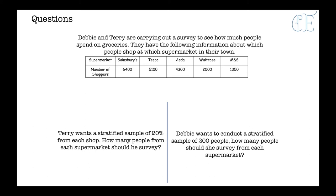If you've paused the video, let's have a look at the question. Debbie and Terry are carrying out a survey to see how much people spend on groceries. They have the following information about which people shop at which supermarket in their town. So we have Sainsbury's, Tesco, Asda, Waitrose and M&S, and then we have the number of shoppers across the bottom. Terry wants a stratified sample of 20% from each shop. How many people from each supermarket should he survey?